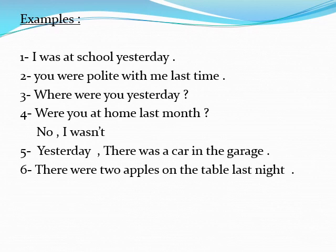Here we have many examples to describe past events using 'was' and 'were'. Number one: I was at school yesterday. Number two: You were polite with me last time. Number three: Where were you yesterday? Number four: Were you at home last month? No, I wasn't. Number five: Yesterday, there was a car in the garage. Number six: There were two apples on the table last night.